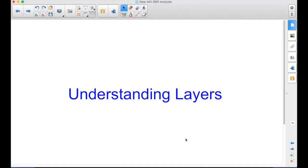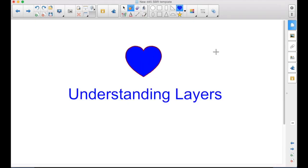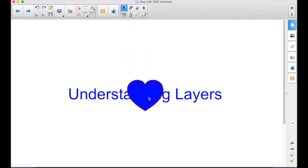In Smart Notebook, every object you put on the page is a new layer. If I do this heart here, it is now a new layer, and since it was the last thing that I created, it is on top of the previous layer.